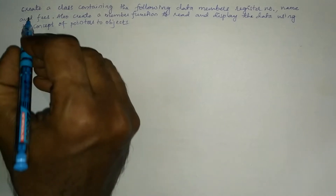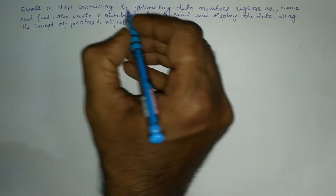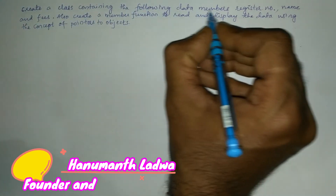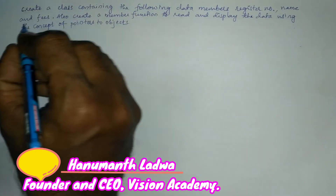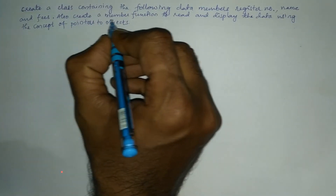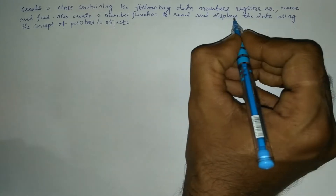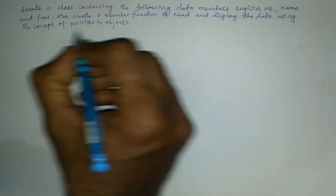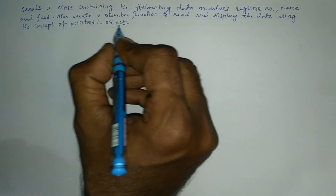Hello, dear students. In this video we are going to create a class containing the following data members: register number, name, and fees. We will also create member functions to read and display the data using the concept of pointers to objects.